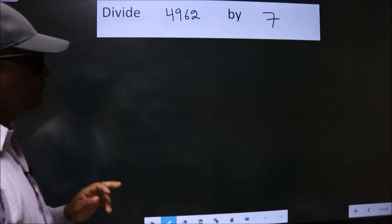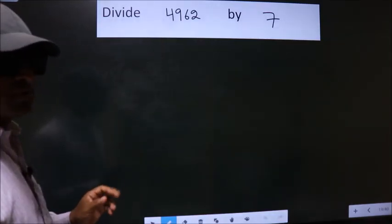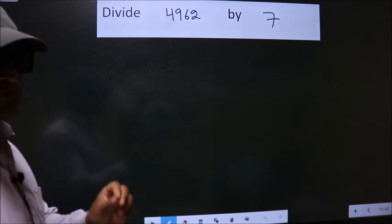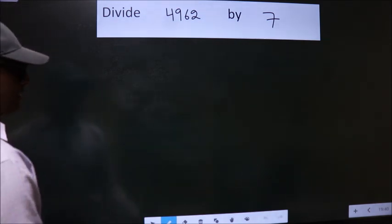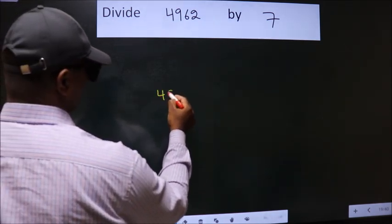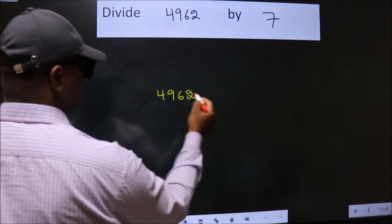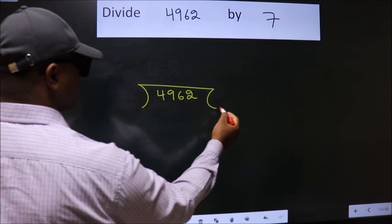Divide 4962 by 7. To do this division, we should frame it in this way. 4962 here, 7 here.